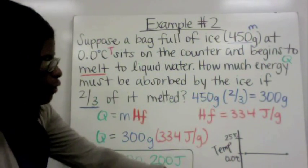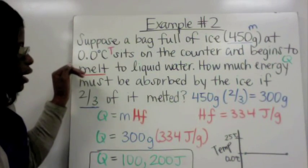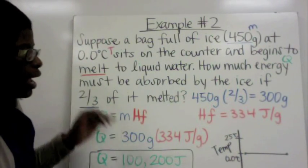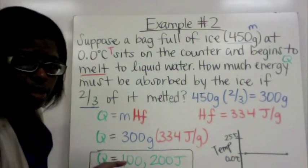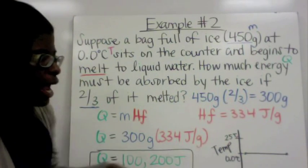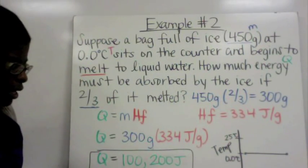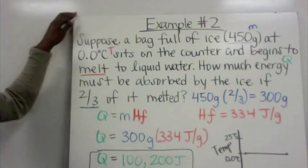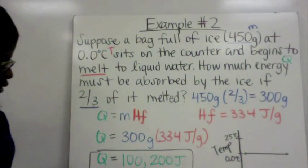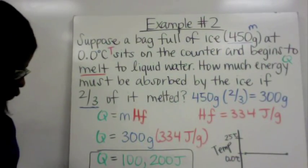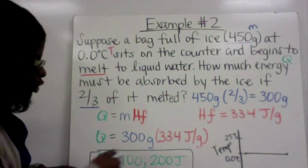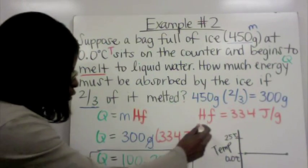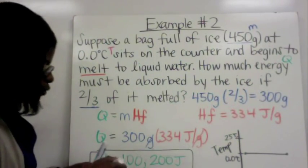On a graph for this example, we started at 0°C and there's no other temperature mentioned, so the timeline would just be a straight plateau. Grams cancel in the calculation, leaving only joules as the unit.